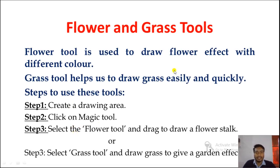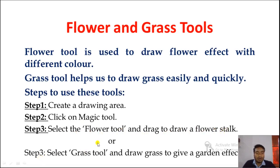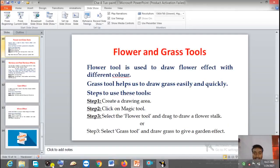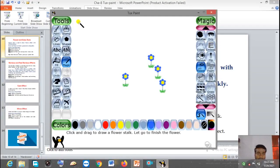Here are the steps for drawing the flower and grass effects. Step one: create a drawing area. Step two: click on the Magic Tool. Step three: select the Flower tool if you want to give a flower effect, and drag to draw a flower. When drawing a grass effect, select the Grass tool and draw grass to give a garden effect.